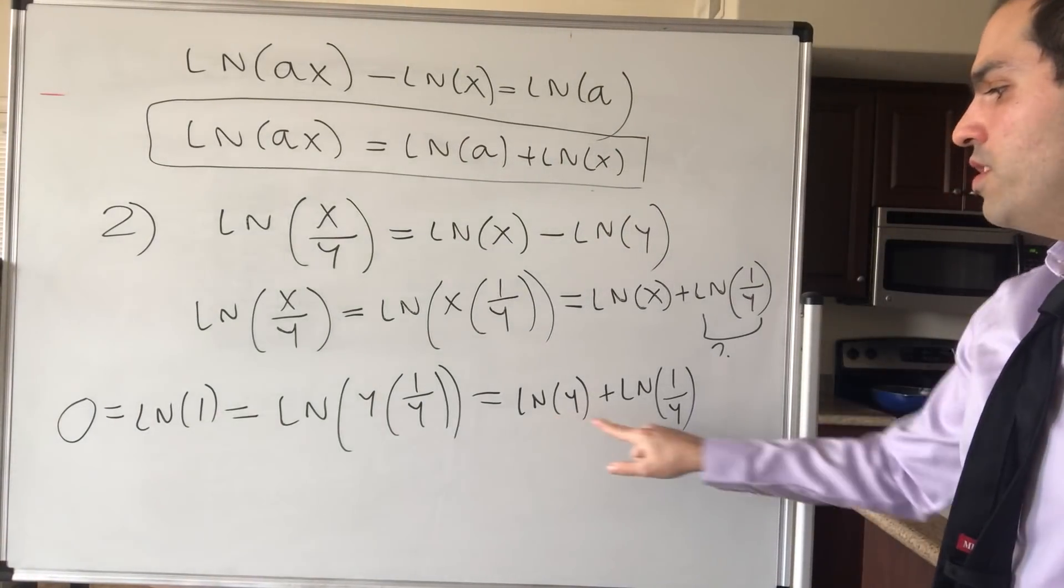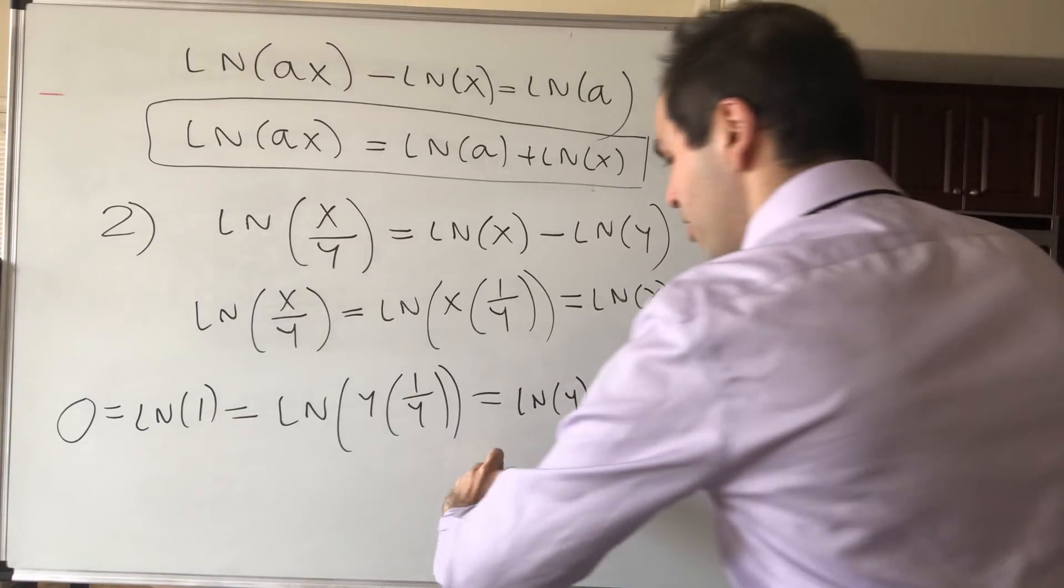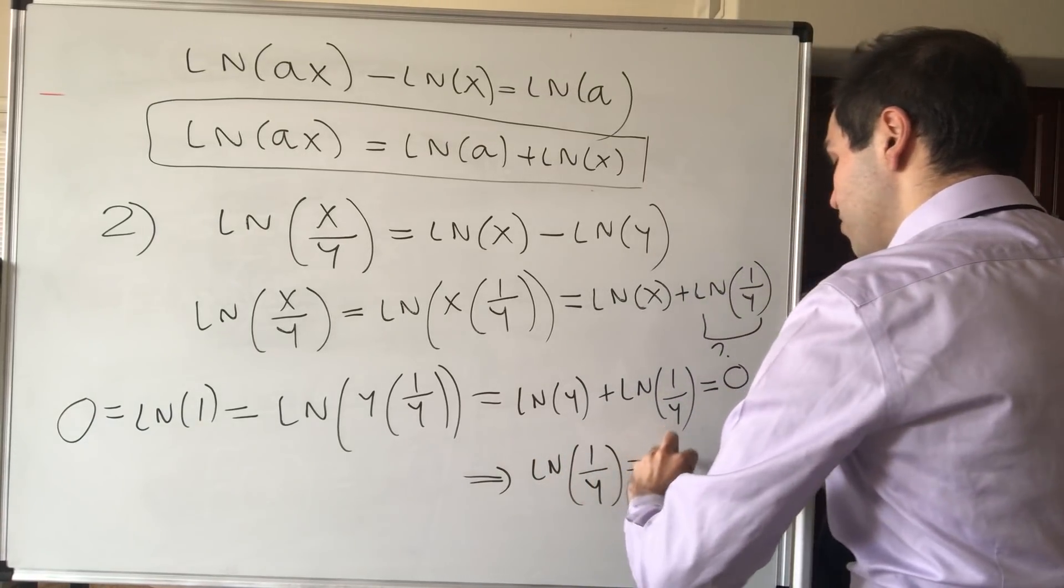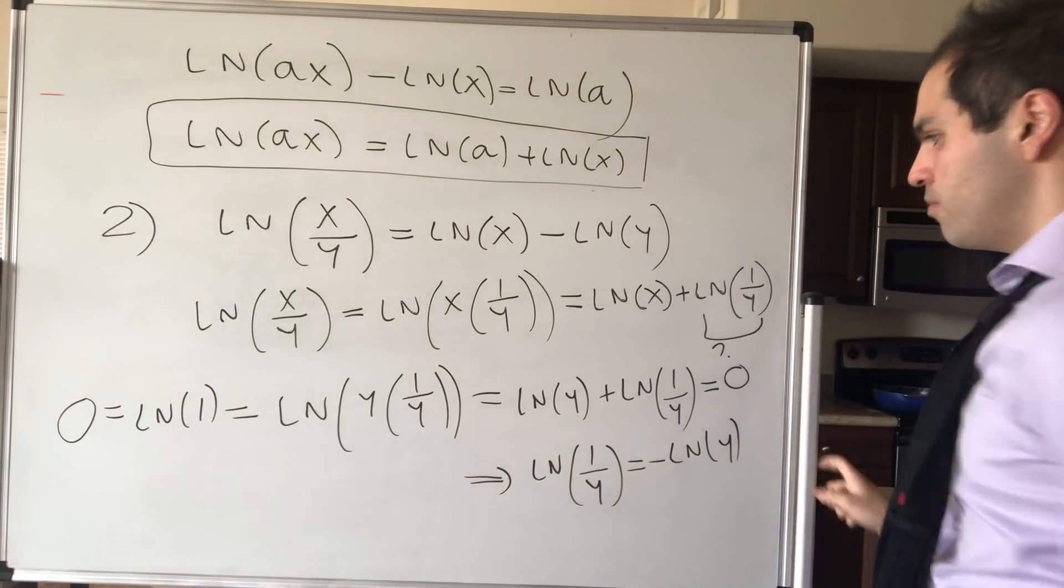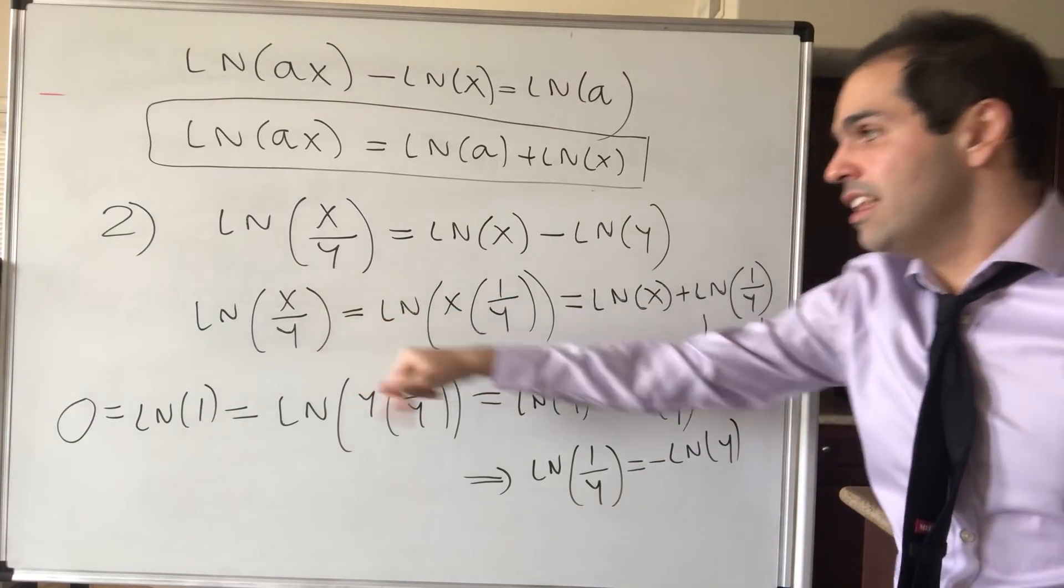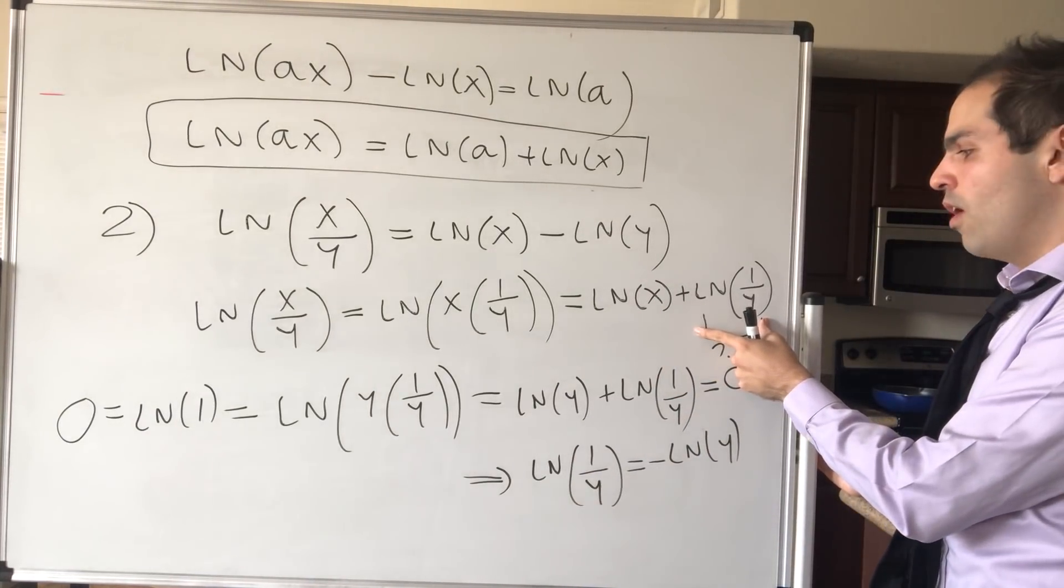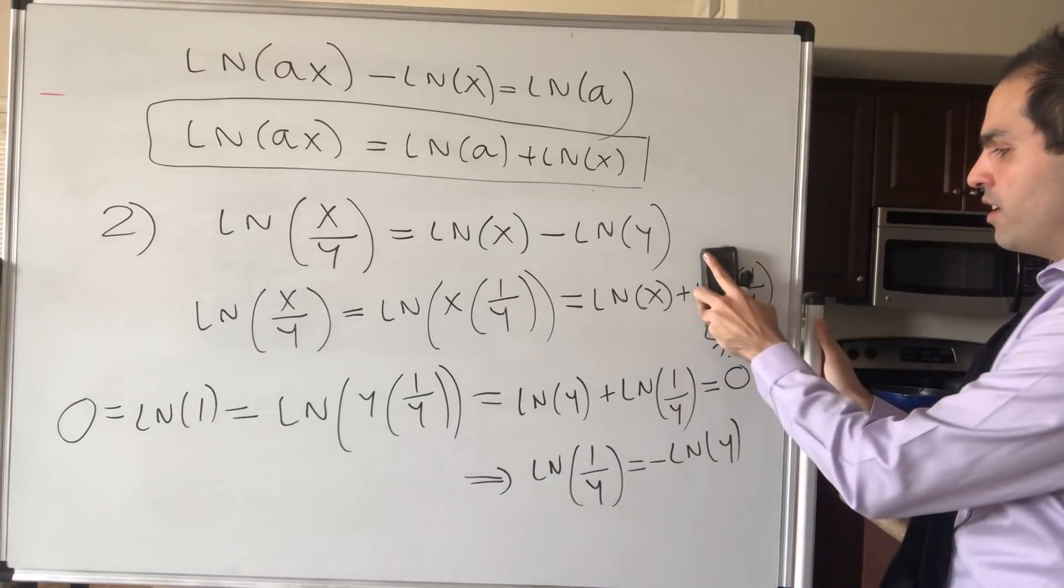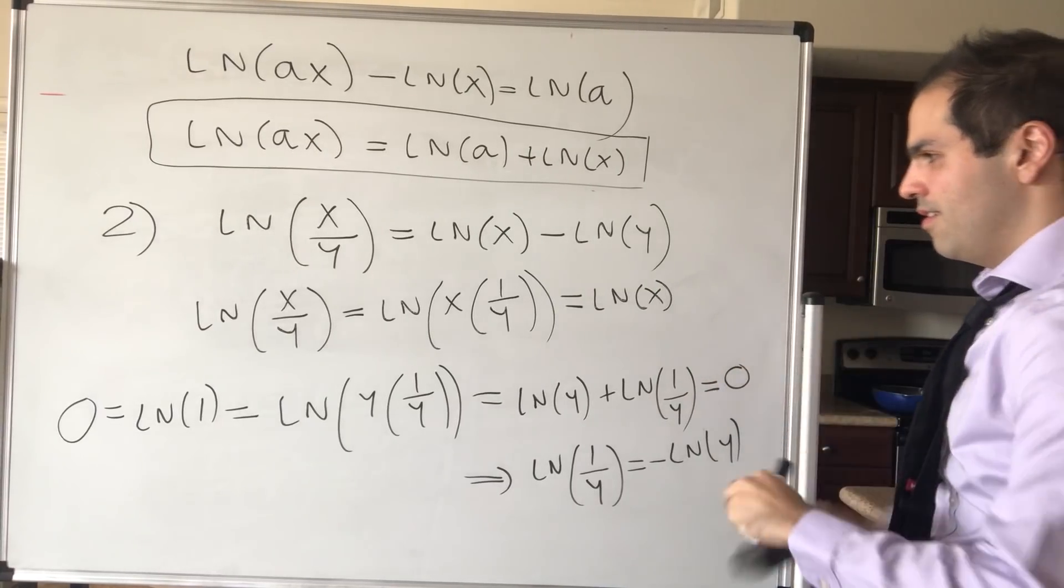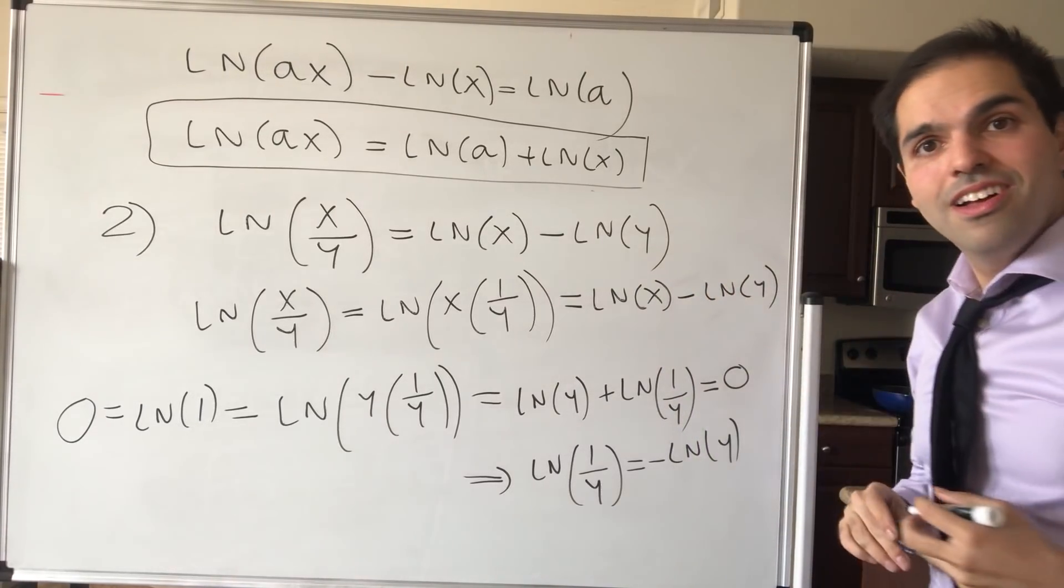And then what we get? We simply get ln of y plus ln of 1 over y equals 0, which tells you that ln of 1 over y equals minus ln of y. And so in particular, going back to this thing, so ln of x over y is ln of x plus ln of 1 over y, but now we just found that this is minus ln of y. Ta-da!